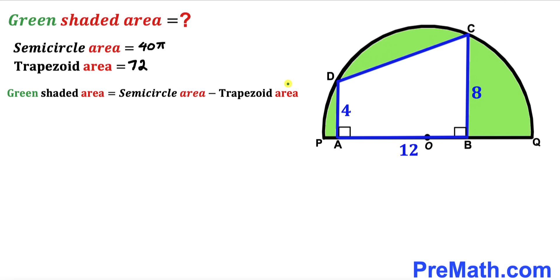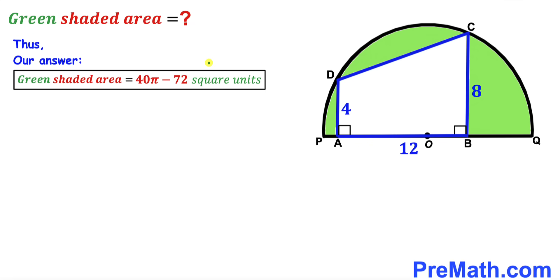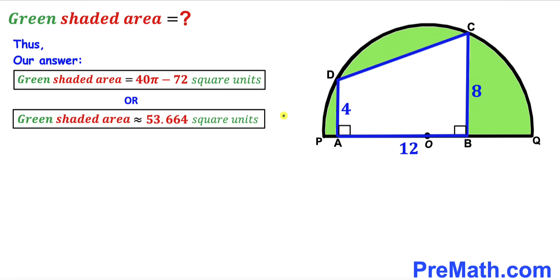For the final step, the green shaded region area equals the semicircle area minus the trapezoid area: 40π − 72 square units. This is approximately equal to 53.664 square units. That's our final answer. Thanks for watching, and please don't forget to subscribe to the channel for more exciting videos!